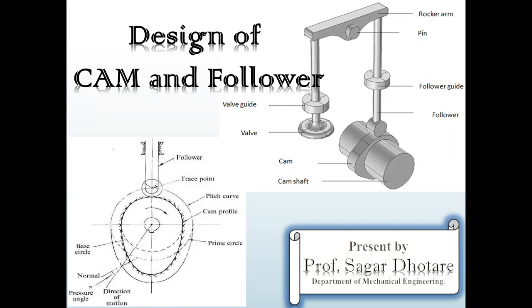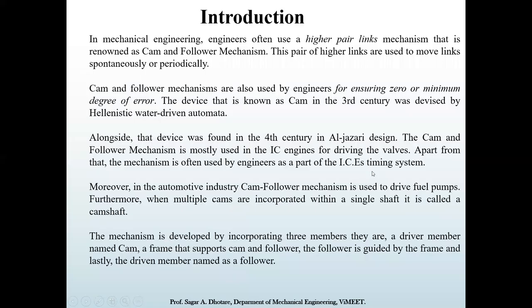Cams are normally used for automatic machines, IC engine machines, machine tool applications, printing control mechanisms, and so on. They are also used in manufacturing of die casting, milling, and punching press. The cam is related to use as a higher pair link mechanism, and that higher pair link mechanism is used to move links spontaneously or periodically.